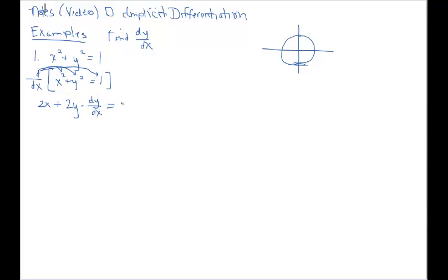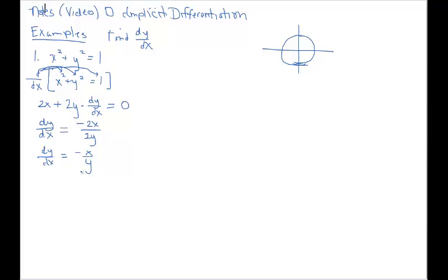Now solving for dy/dx: subtract the 2x term and divide by 2y, giving negative 2x over 2y, which simplifies to negative x over y. Notice that our derivative now has both x and y in it. When we implicitly differentiate, the derivative may have just x, just y, or both x and y.